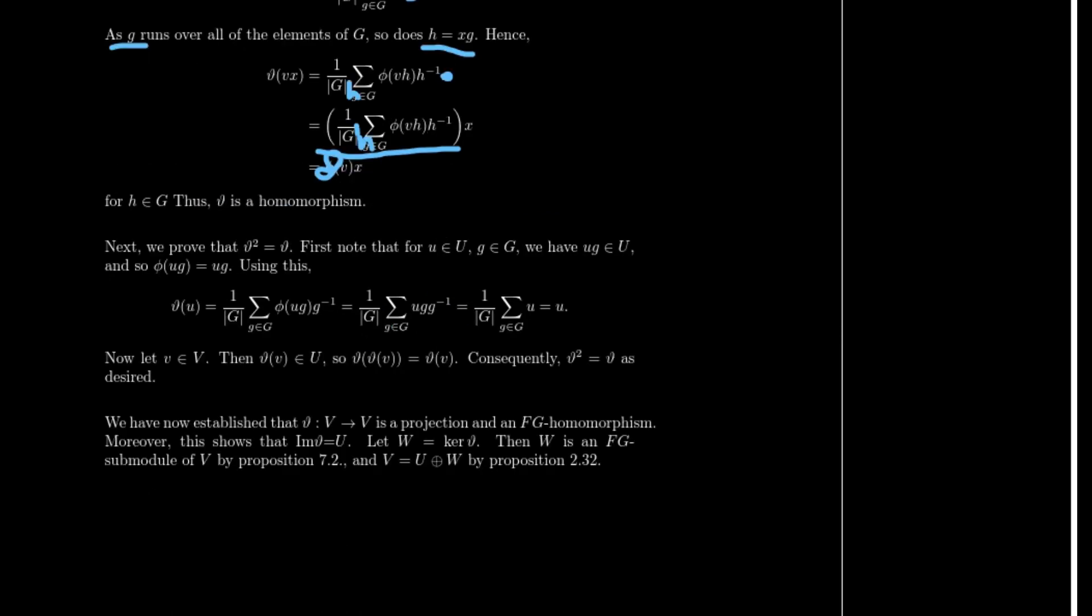Using this, we can show that θ of U is just going to be 1 over the order of G times the sum of φ of UG times G inverse. But like we said here, φ of UG just is UG. So it's just the sum of UGG inverse, which as these cancel out, just becomes 1 over the order of G times U plus U plus U many times, which ends up just becoming U.